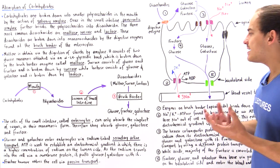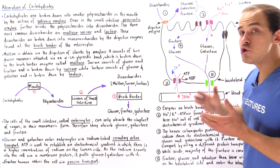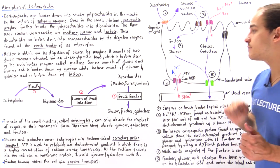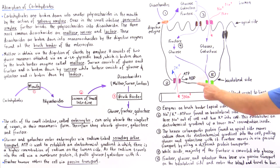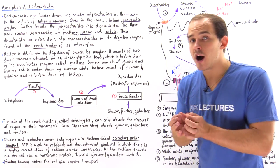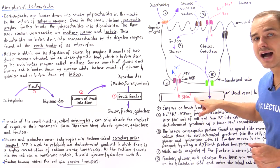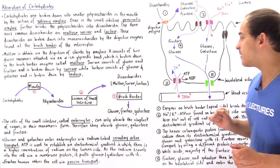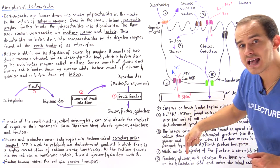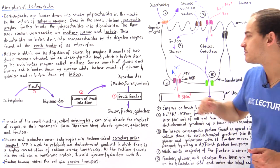Sodium-potassium ATPase is a pump that hydrolyzes ATP — transforming it into ADP — and at the same time, it pumps three sodium ions against their electrochemical gradient out of the cell to the basolateral side, while pumping two potassium ions into the cell.